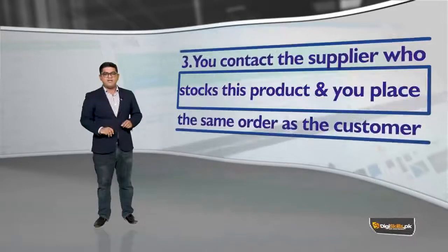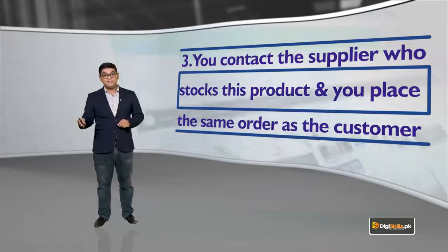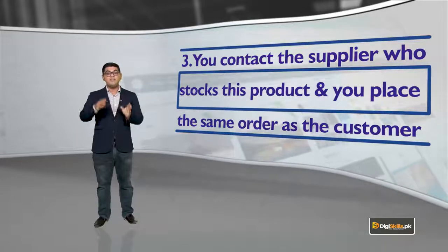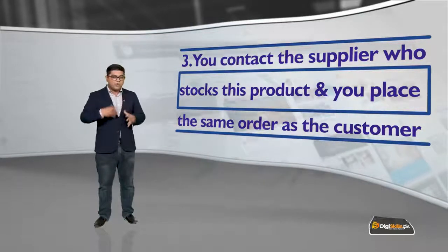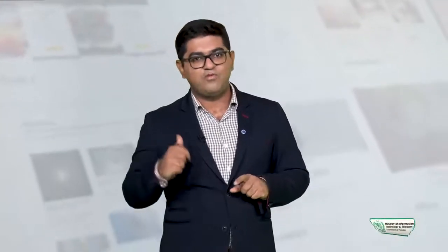Number three step: you contact the supplier jiske paas wo product stock mein hai, and you place the same order as the customer. Pehle customer ne aapko order place kiya, aap ne customer ko bataye baghair jaake product supplier ko bhej diya. Jaise koi aapko call karke koi cheez khareedne ko kahe, aap kahein 'sabar karo mein laa ke deta hoon' — aapne customer ko nahi bataaya ke aapke paas hai ke nahi, aap ne phir apne supplier ko call karke order place kiya aur commission rakh ke aage bhej di. Drop shipping works like this.